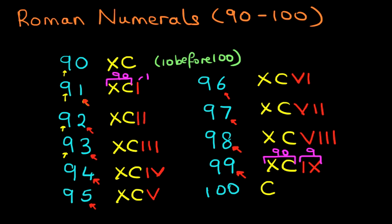And 100, we've already done. That is C. Take a very close look at these numbers, the Roman numerals. They are very easy to do. Once you know how to do the tens, we already know how to do from one to 10. All of this becomes very simple. So have a practice writing down the Roman numerals from 90 to 100 without looking at the screen.